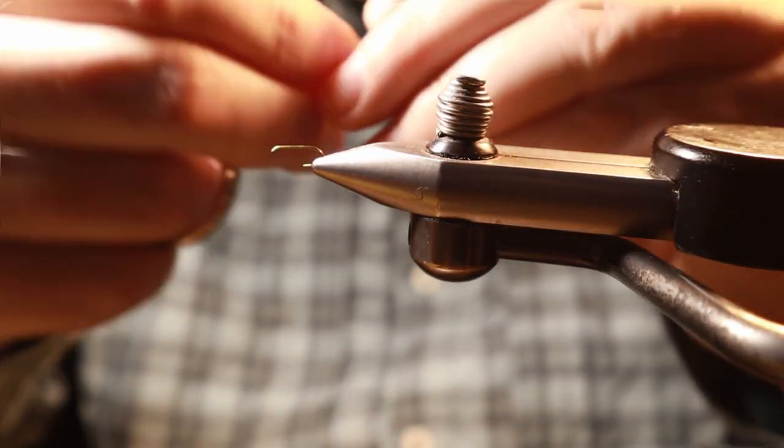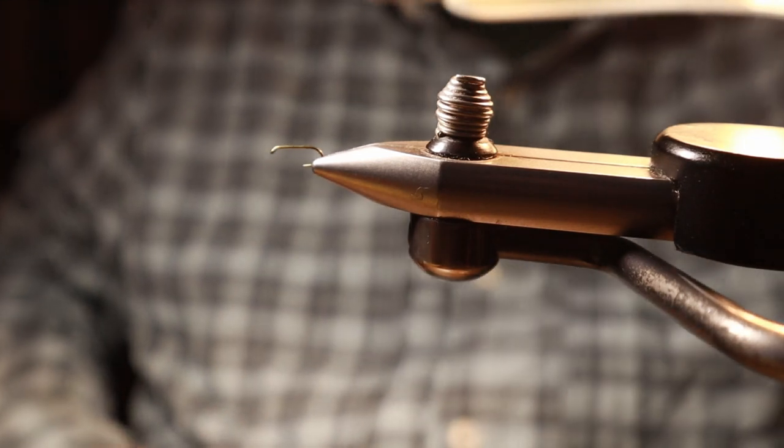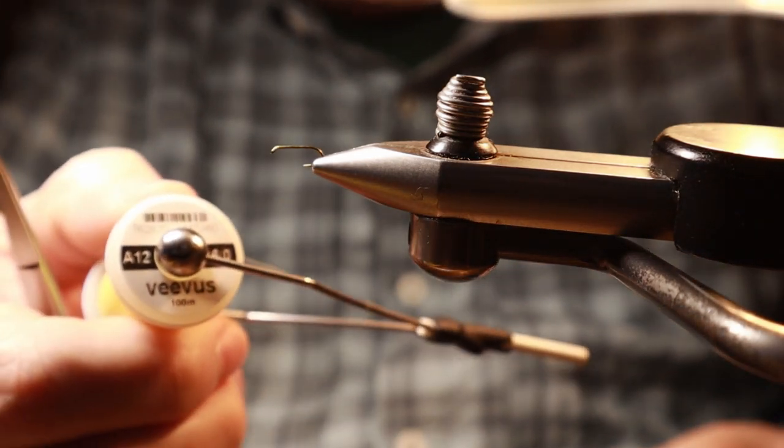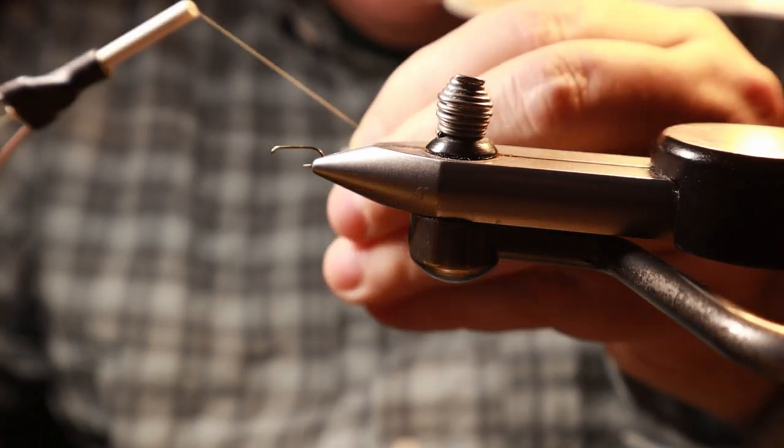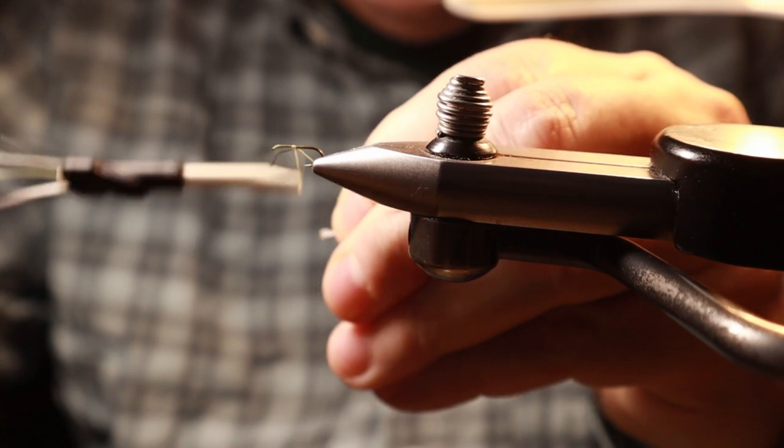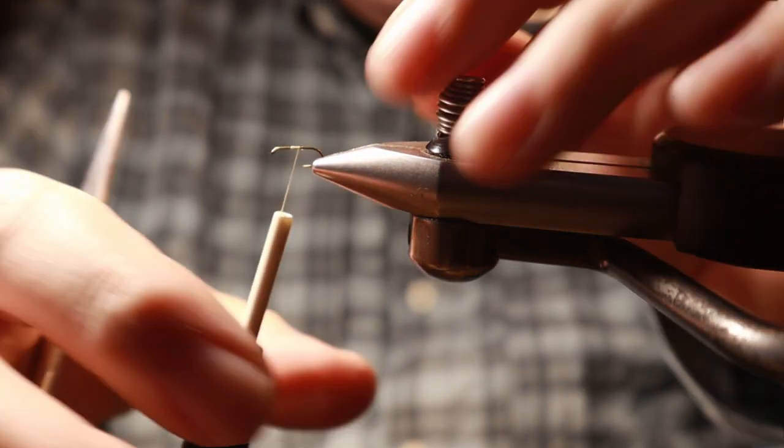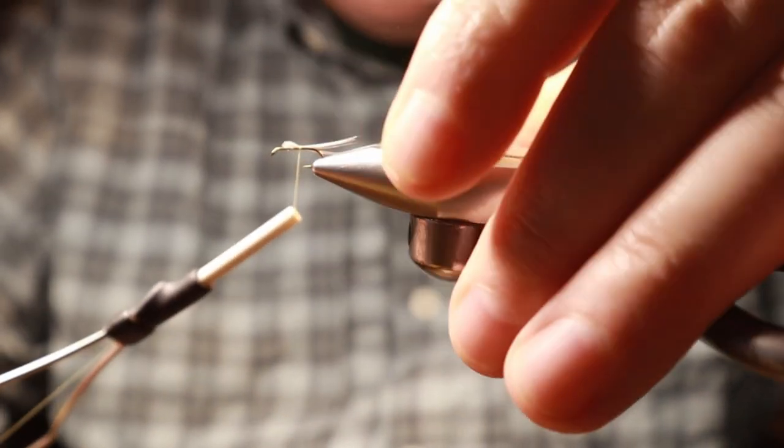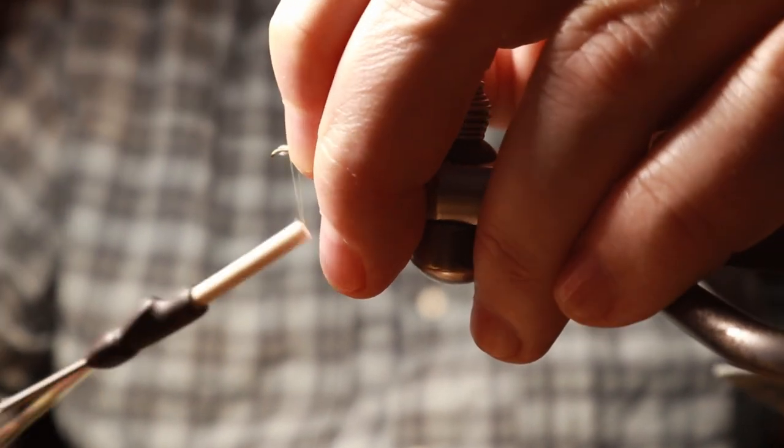I'm using Veevus 16-aught which finishes really nice for smaller flies. It's actually pretty strong even though it's a 16-aught, surprises me. I do break it once in a while but having the smaller heads is worthwhile for me. We want a tail that's approximately the length of the shank.